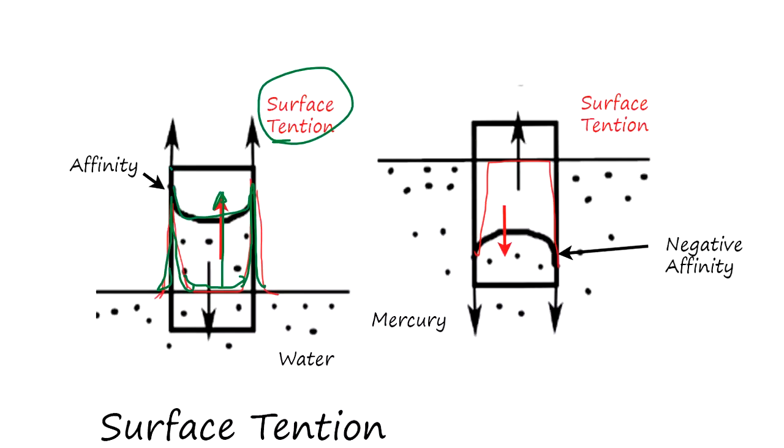In mercury, there's negative affinity. What happens is the glass repels the mercury here and it repels. It doesn't look like that, but there is surface tension, so this repelling force pulls this area back down, so it looks like this.